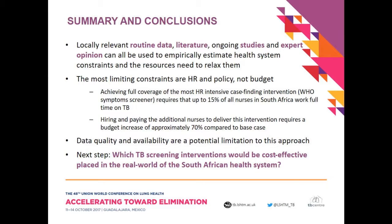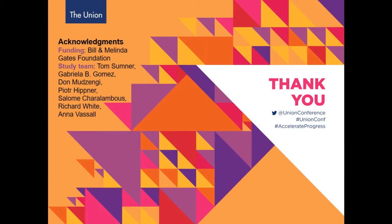In conclusion, locally relevant routine data, literature, ongoing studies, and expert opinion can be used to empirically estimate health system constraints in real-world settings and how much it would cost to relax them. The most limiting constraints found were human resources and policy decisions rather than actual budget. Achieving full coverage of the most human-resource intensive case-finding interventions would require reallocating up to 15% of all human resources currently working in South Africa to TB. Data quality and availability remain a potential limitation.